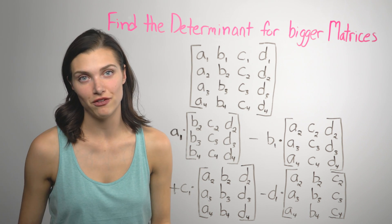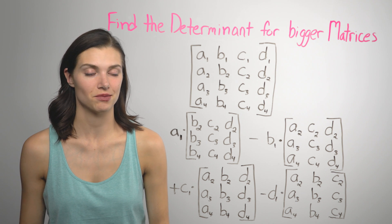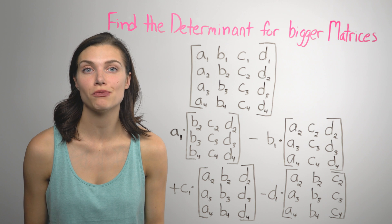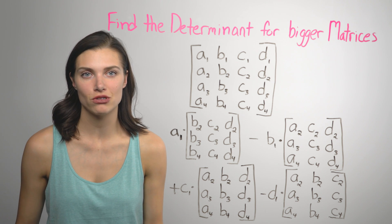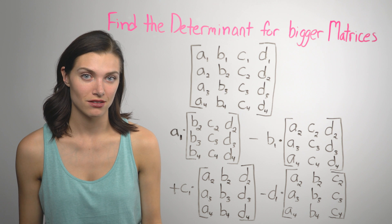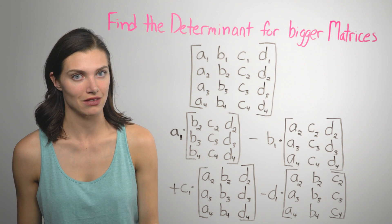From here you find the determinant for each of those 3x3 matrices, just like before. And I know this is crazy and it turns into a huge amount of work. But really, as matrices get bigger, it doesn't get harder, there's just many more steps. So hopefully you won't have to do too many of these by hand.